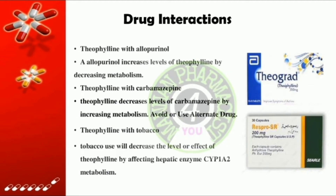Many drugs have interactions with theophylline, but a few important ones are as follows. Theophylline with allopurinol: allopurinol increases levels of theophylline by decreasing its metabolism. Theophylline with carbamazepine: theophylline decreases levels of carbamazepine by increasing metabolism — avoid or use an alternate drug. Theophylline with tobacco: tobacco use will decrease the level or effect of theophylline by affecting hepatic enzyme CYP1A2 metabolism.